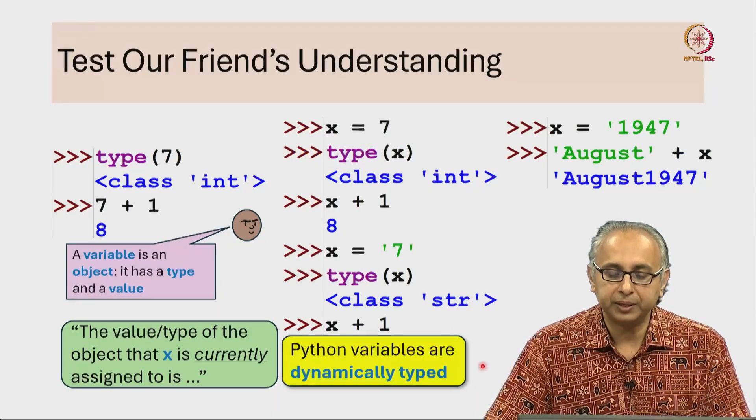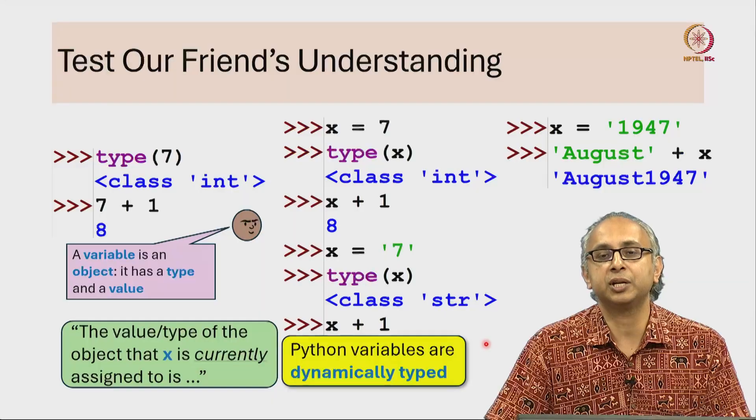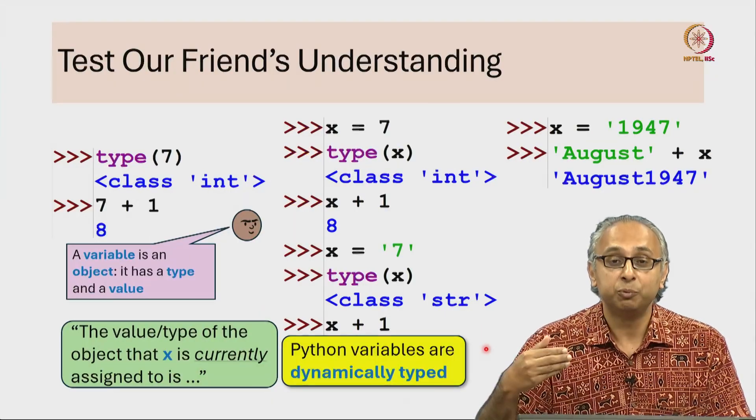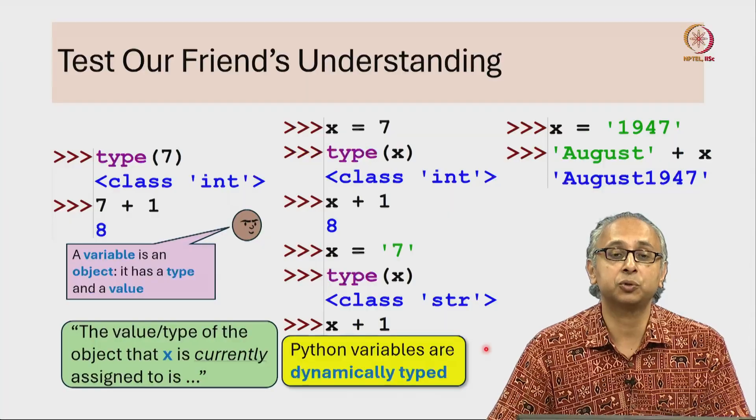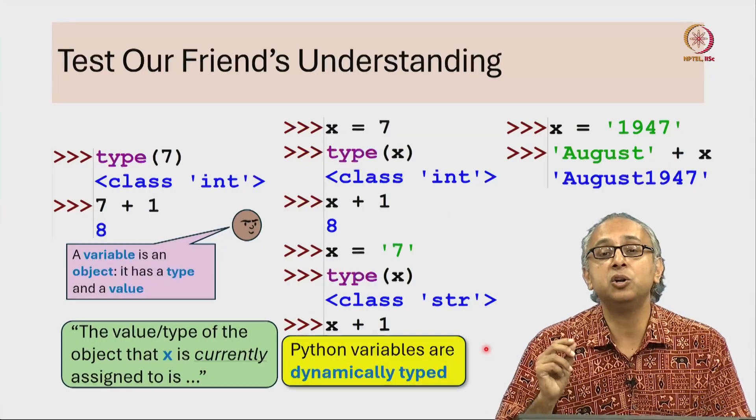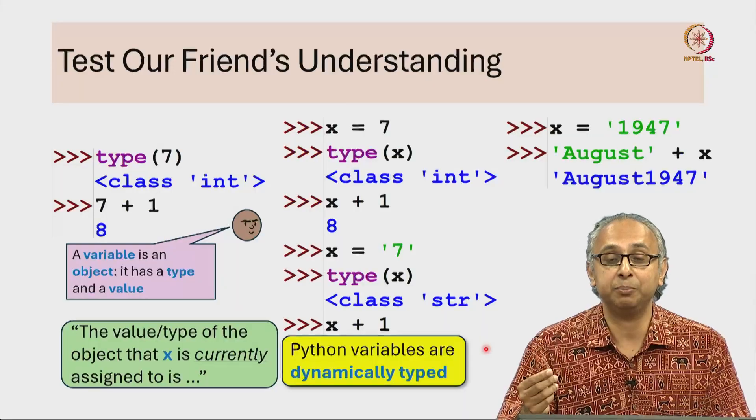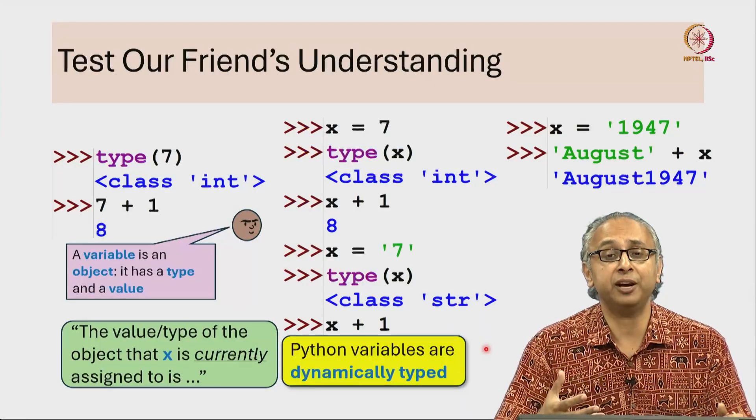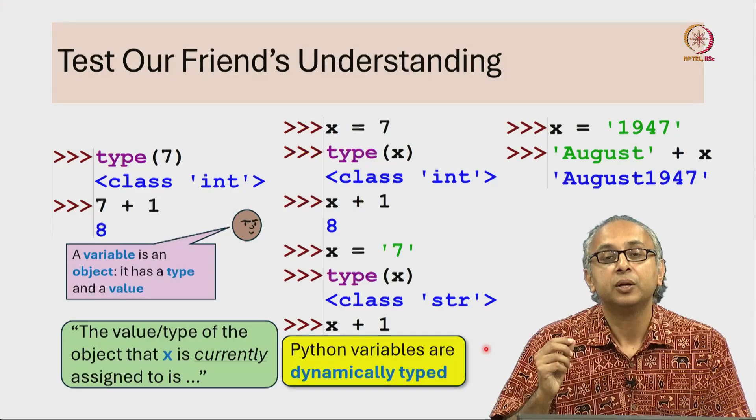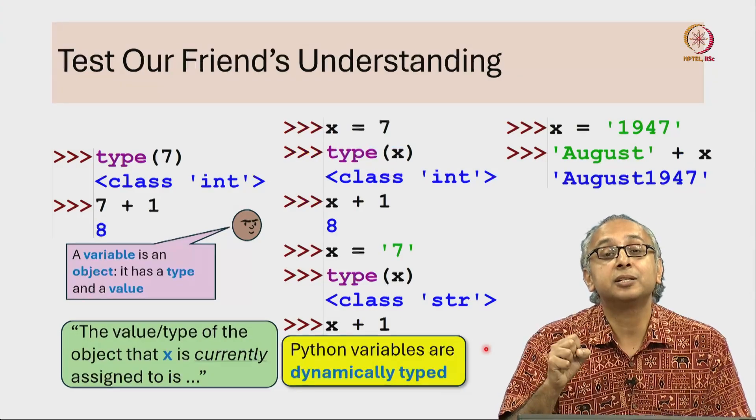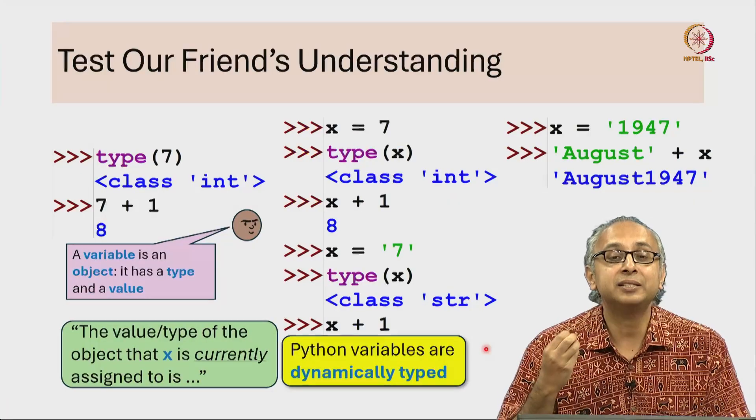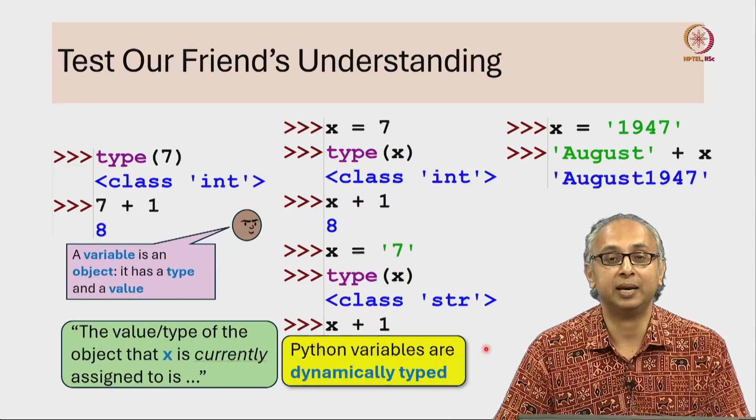Now I want to warn you that there are many other languages that you might encounter, including the C programming language which we will see later on in this course. And in that language, variables are not dynamically typed. When you create a variable, and we shall see how to do that later on in those languages, at the time of creation, the type of the variable is fixed. Those are called statically typed languages.